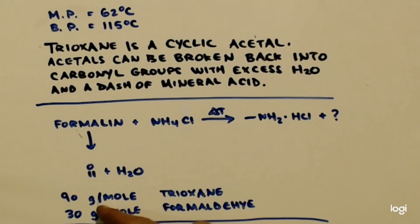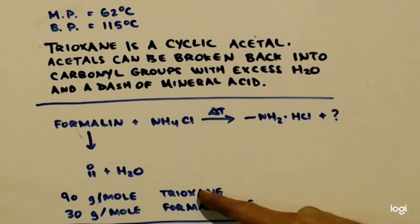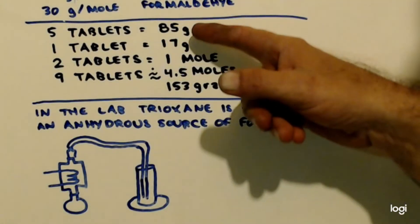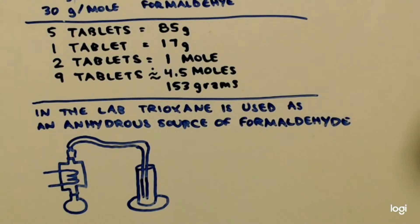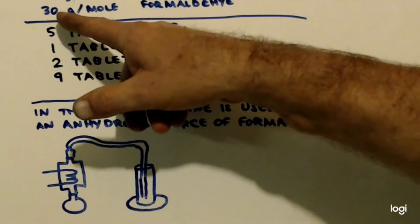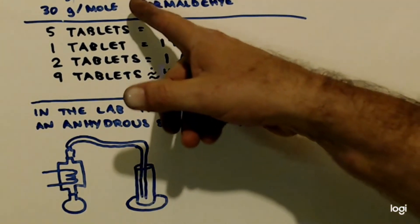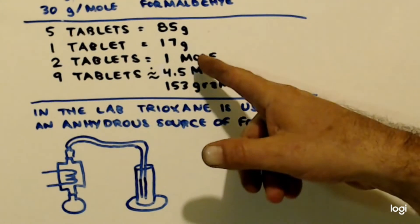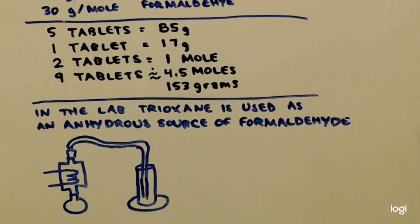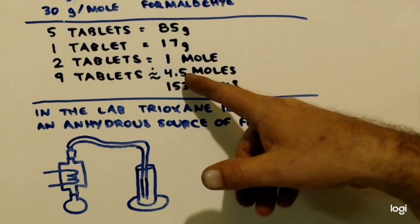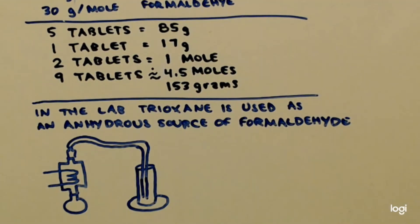The only difference is the molar mass of trioxane is 90 grams, and the molar mass of formaldehyde is 30 grams. Because this is a trimer. That means there's three formaldehydes in there. That's why there's three times as much weight. Thirty times three is 90. I had five tablets I put into that reaction flask, and I got 85 grams. Divide that by five, that's 17 grams per tablet. Formaldehyde is 30 grams per mole. So that's a half a mole, a little bit more than half a mole. So two tablets is almost one mole. I've had nine tablets altogether. So that's a little bit more than four and a half moles. It should be 153 grams.